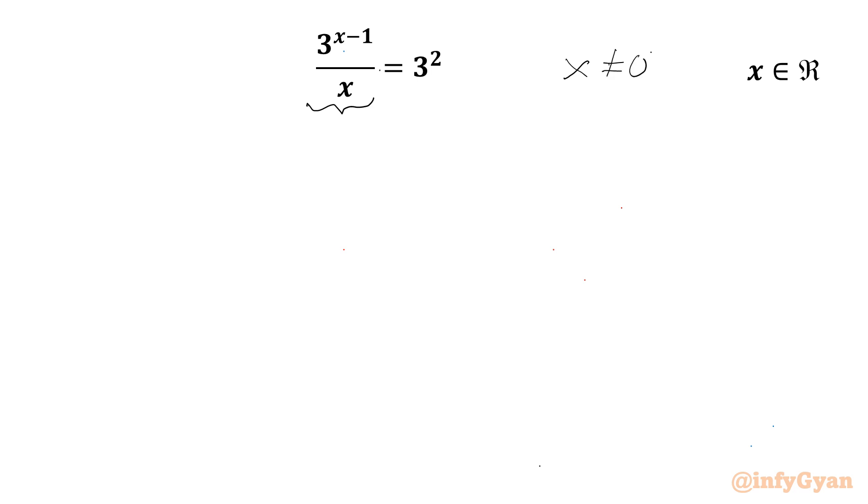Now I can cross multiply. So the equation will become 3 to the power of x minus 1 equals 3 squared times x, or I can write 3 to the power of x minus 1 equals 9 times x.